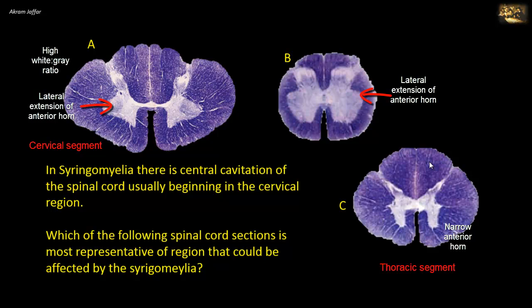Section A has a lateral extension of the anterior horn and the highest white to gray ratio. In addition, the dorsal funiculus is segregated into a medial fasciculus gracilis and lateral fasciculus cuneatus. In lower sections such as the lumbar or lumbosacral region represented in B, the dorsal funiculus only contains fasciculus gracilis. Fasciculus cuneatus only appears in sections above T7 — the mid-thoracic level — and is present only in the upper thoracic and cervical regions. So the presence of fasciculus cuneatus also supports that the section belongs to the cervical region.